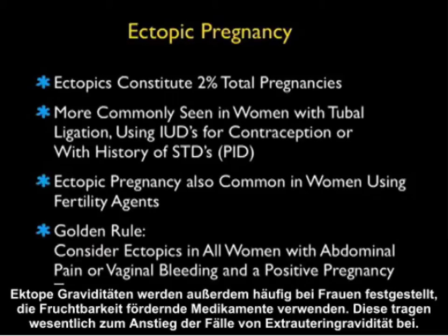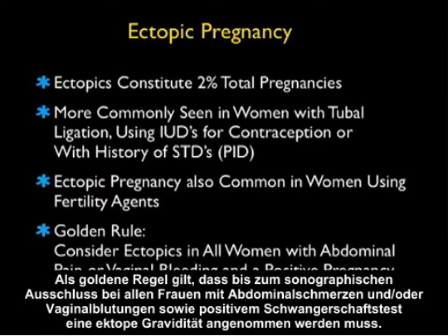Ectopic pregnancy is also commonly seen in women using fertility agents, which accounts for the increasing rate of ectopic pregnancy overall. As a golden rule, we must consider ectopic pregnancy in all women with abdominal pain and/or vaginal bleeding and a positive pregnancy test, until ruled out by sonography.